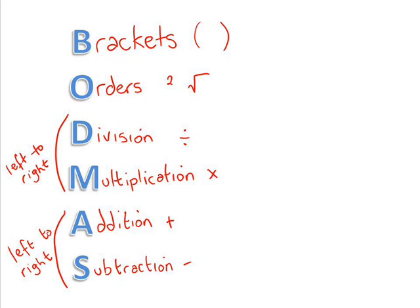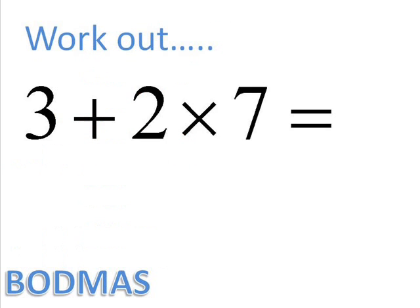So first off, we'll have a quick look at applying this with the question we just did. 3 plus 2 times 7. There's two operations here. There's addition and there's multiplication. Now we use the word BODMAS. There's nothing in brackets. There's no orders. There's division and multiplication. There's one there. That's the 2 times 7. So this is the one we do first. 2 times 7 is 14.